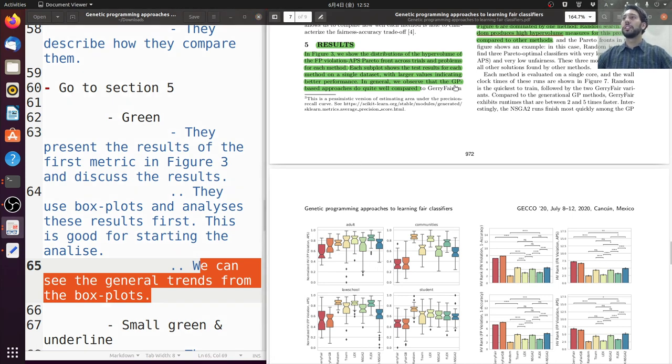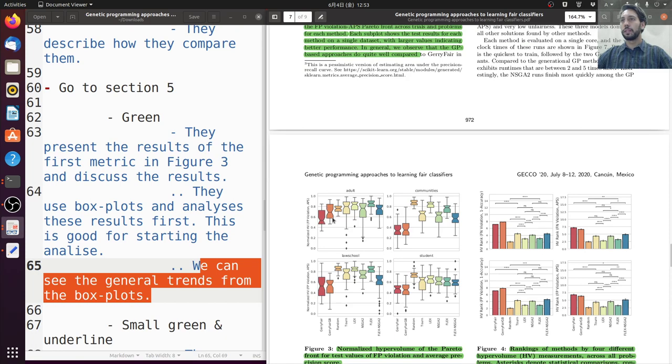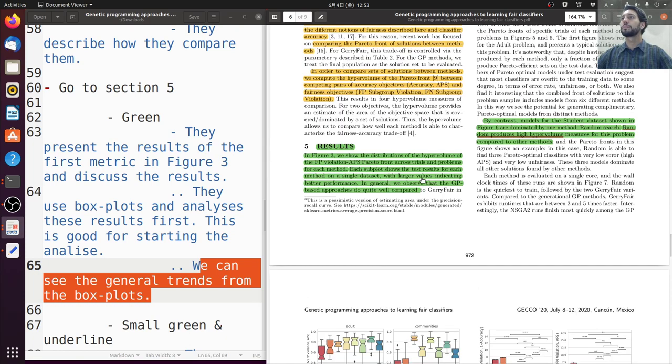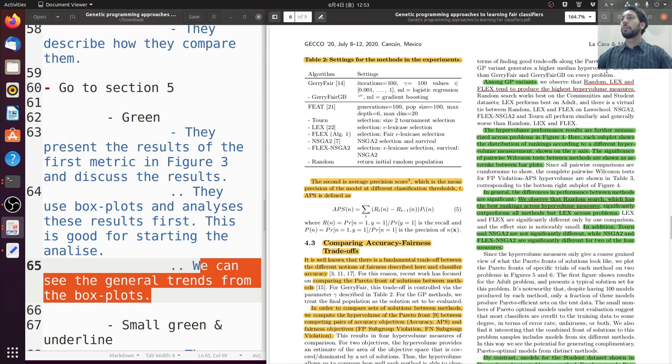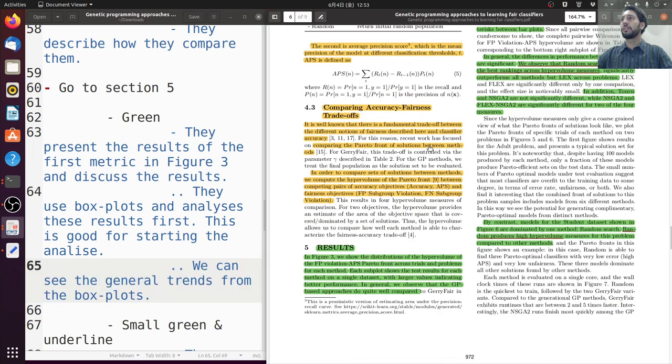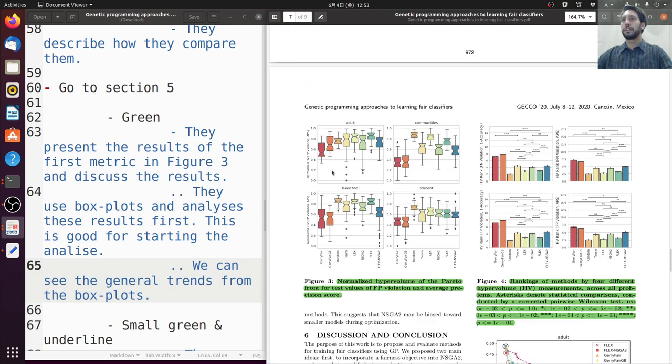So for example, they observe that the GP based approach, the genetic programming based approaches, do quite well compared to Jerry Fair. Yeah, so Jerry Fair is the first one here. Generally, quite some lower performance. In terms of finding good operator front, average GP variant has a higher performance compared to Jerry Fair or Jay Fair and Jay Fair JB. The first two always with a lower performance.